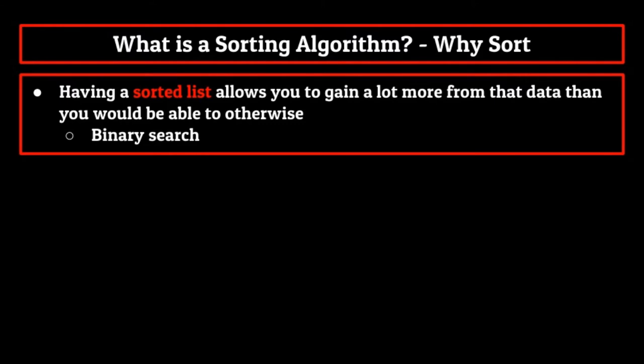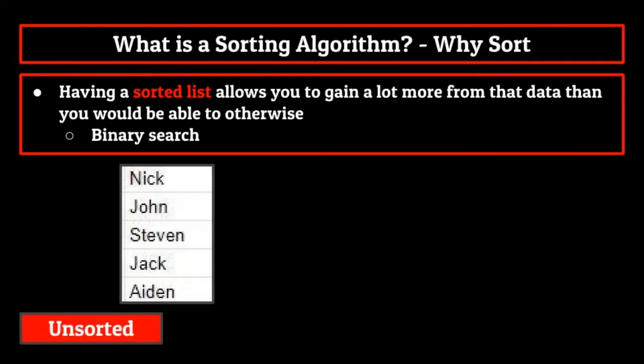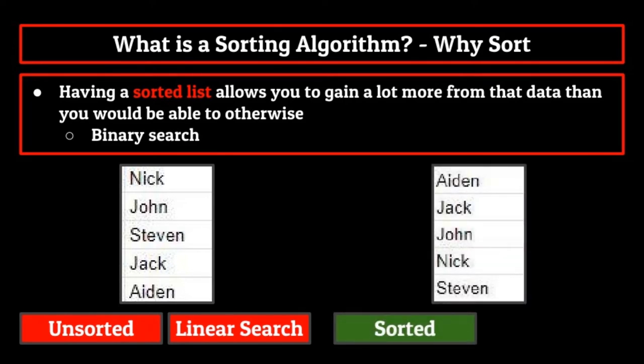Having a sorted list allows you to gain a lot more from that data than you would be able to otherwise. The biggest example of this is the fact that once a list is sorted, you're able to search through it much, much faster. With an unsorted list, we have to use linear search to find an element within it. However, with a sorted list, you're able to search through it using binary search, which is much more efficient.